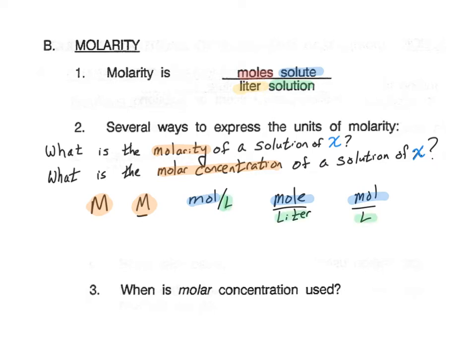There is one more notation that is a little unusual. We write a square bracket with the chemical we're identifying inside it, put an equal sign, and then write the concentration value. This notation is used especially for acids, bases, and batteries. For example, to express the concentration of an acid, we put H+ inside the bracket, and that tells us the molar concentration.